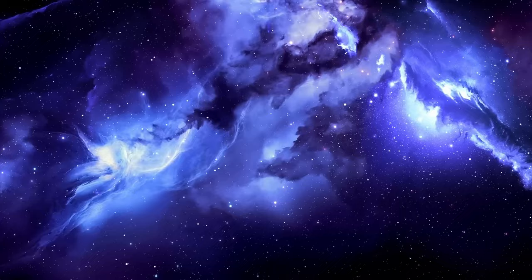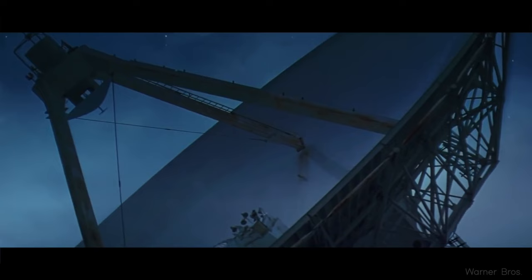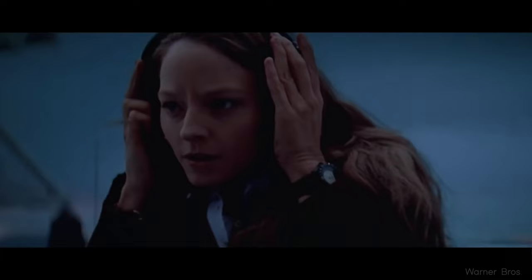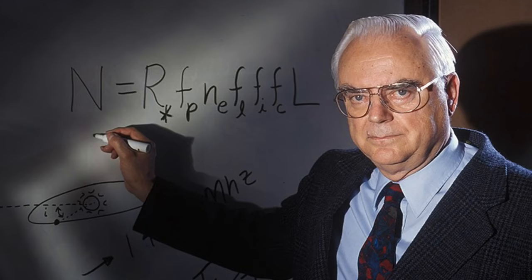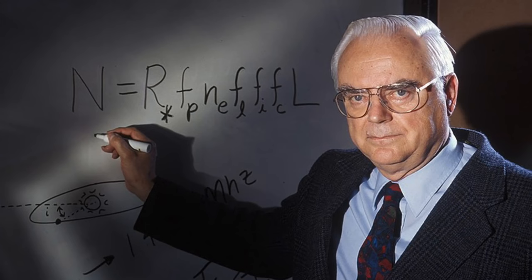La formula di Drake è un modo per stimare il numero di civiltà al di fuori del nostro pianeta esistenti e in grado di comunicare nella nostra galassia la Via Lattea. Tuttavia la formula dipende da molti fattori che sono incerti o sconosciuti e quindi il risultato può variare enormemente a seconda delle ipotesi che si formulano.